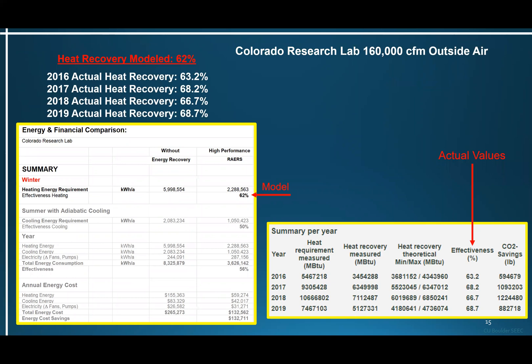Another system — a research lab in Colorado with 160,000 CFM of outside air. The model calculated 62% annual heating effectiveness. Actual post-occupancy results: 2016 — 63.2%, 2017 — 68.2%, 2018 — 66.7%, and 2019 — 68.7%. Again, pretty close.